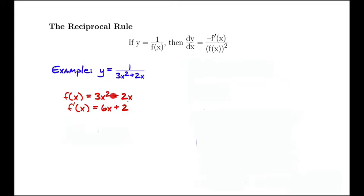f prime of x we get by using the power rule. It's 3 times 2x, or 6x, plus the derivative of 2x, which is just 2.